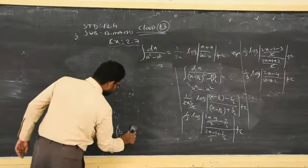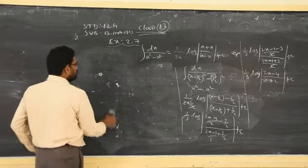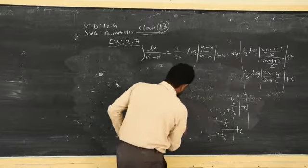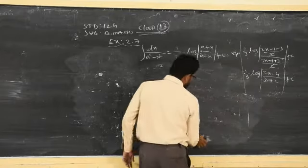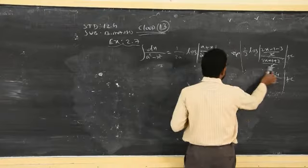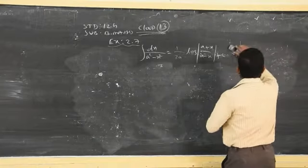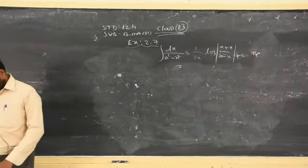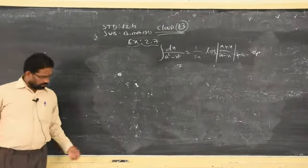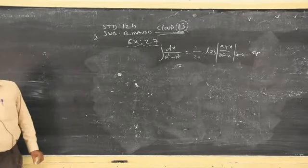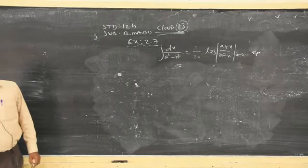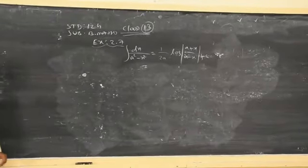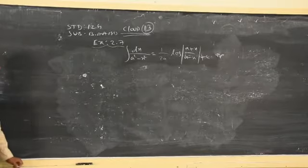Either you follow partial fractions when the denominator is able to be factorized, or if it is not able to factorize, you are supposed to follow only the completing the square method and then apply the relevant formula. For sum numbers 5 and 6, please follow either the partial fractions method or the completing the square method and you will get the answer.